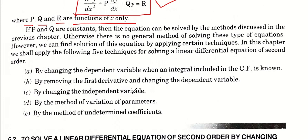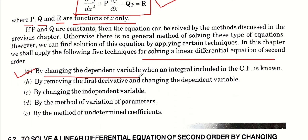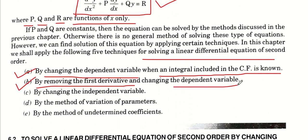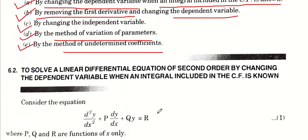We will study these techniques for solving this type of equation. First, Technique 1: we will change our dependent variable, and what will be given to you is an integral included in the complementary function (CF). The second method: you will remove the first derivative term and change the dependent variable. The third method: you will change the independent variable. The fourth method is the method of variation of parameters, and the fifth method is the method of undetermined coefficients.